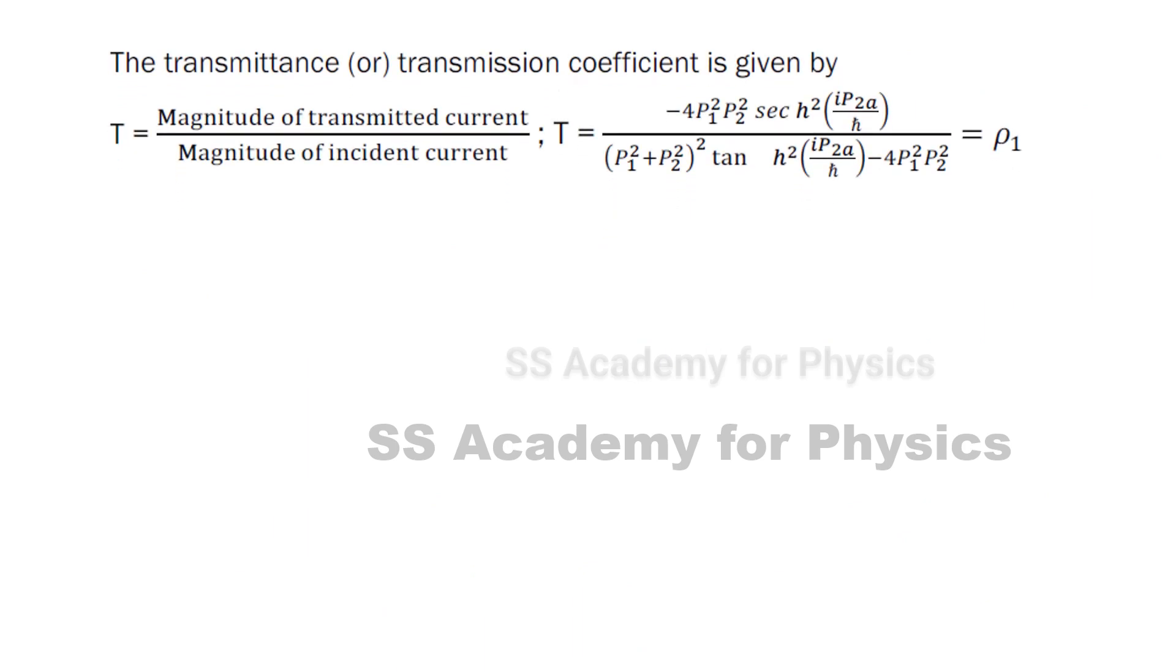The transmittance or transmission coefficient is given by T equals the magnitude of transmitted current divided by the magnitude of incident current. The formulas are provided here.